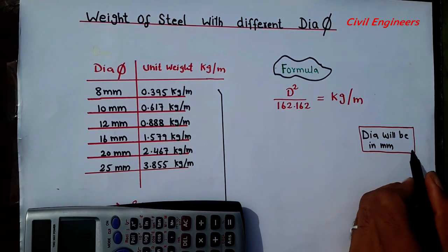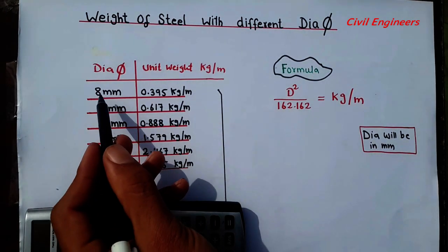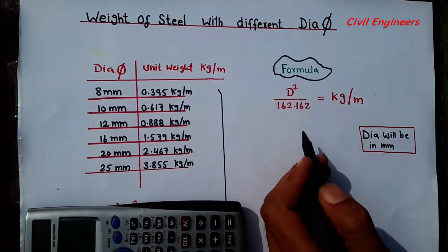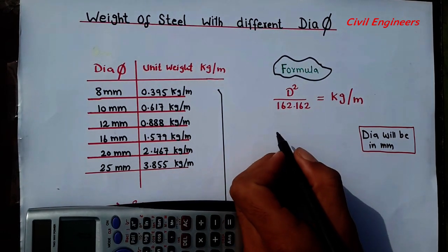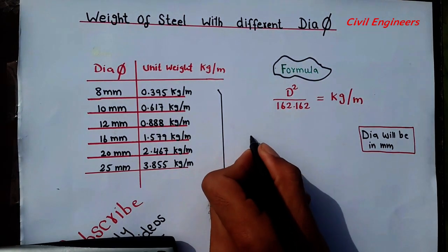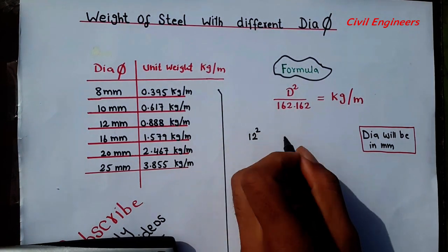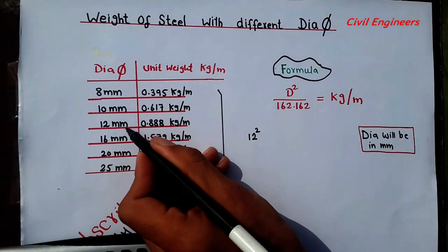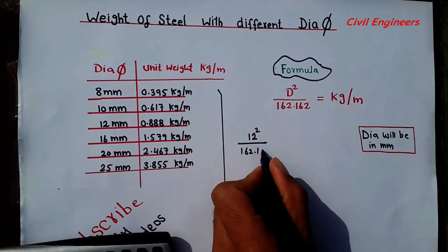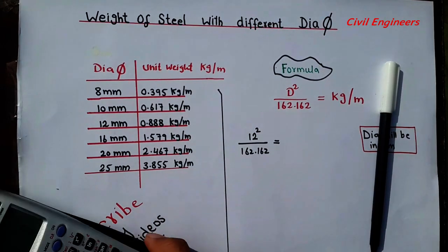So dia will be in millimeter. Now I want to find out the quantity for the steel, for example for the 12 mm. How? For this I want to apply this formula. So look here. D square. For the D square I want to put what? 12. But square. That's why D square. So millimeter is 12 mm and 12 square divided by 162.162 is equal, let's use calculator.